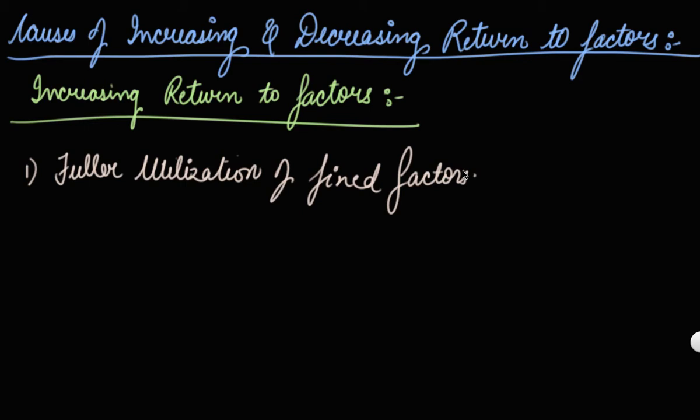As more and more variable factors combine with the fixed factor, it will be fully utilized. So, till the fixed factor is fully utilized, your return to factors are increasing — that is, the total product increases.